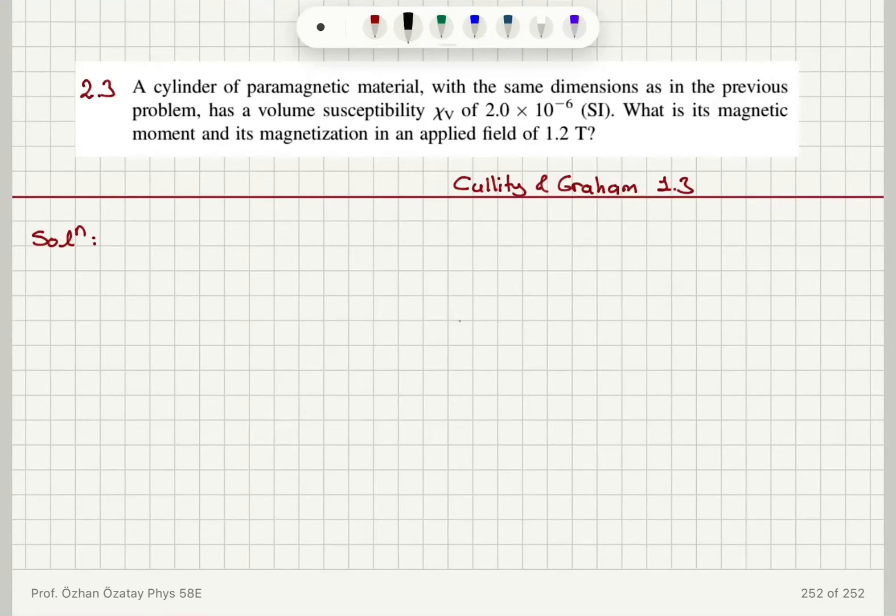A cylinder of paramagnetic material with the same dimensions as in the previous problem has a volume susceptibility of 2×10⁻⁶ in SI. What is its magnetic moment and magnetization in an applied field of 1.2 tesla?